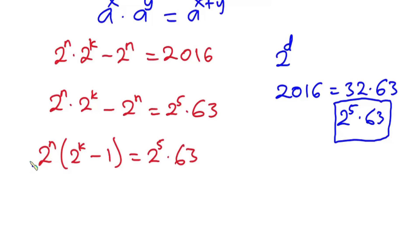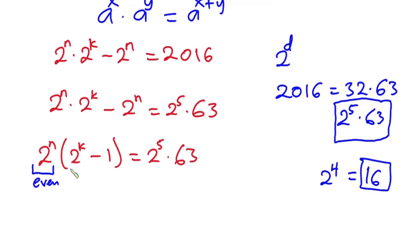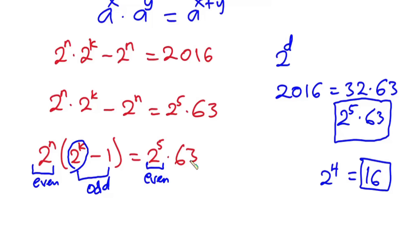Now let's consider the components. 2 to the power n is an even number — for example, 2 to the 4th power equals 16, which is even. Then 2 to the power k is also even, but when you subtract 1 from it, the whole expression (2 to the power k minus 1) becomes an odd number. On the right-hand side, 2 to the power 5 is an even number, and 63 is an odd number. So now let's compare even to even and odd to odd.